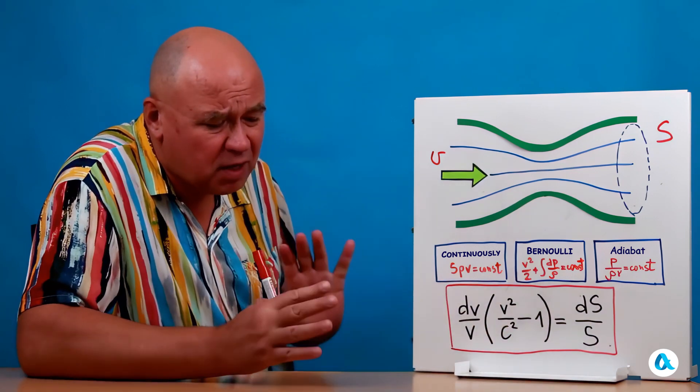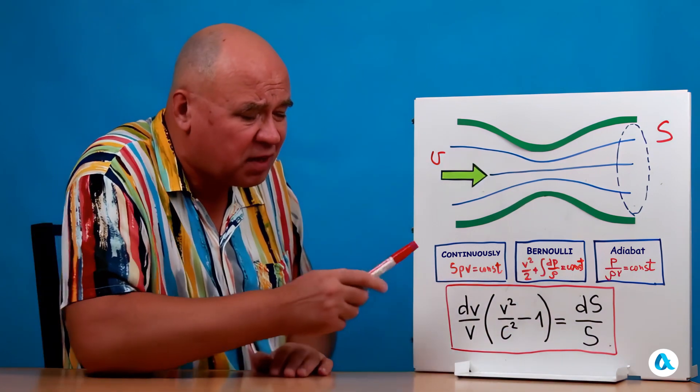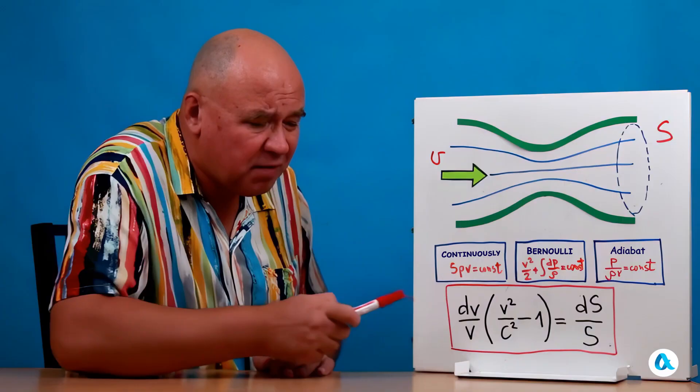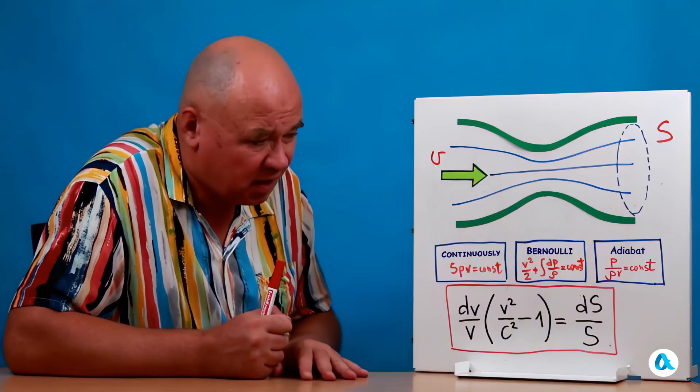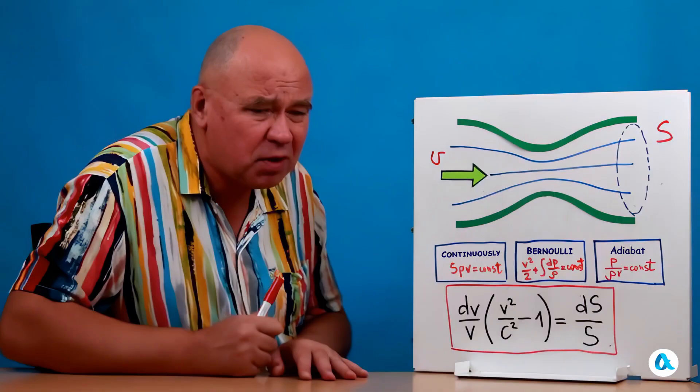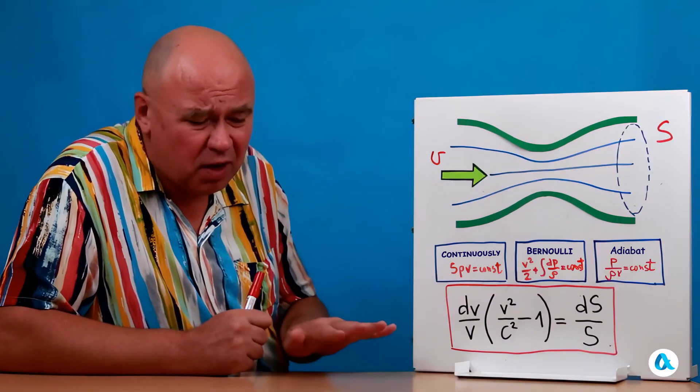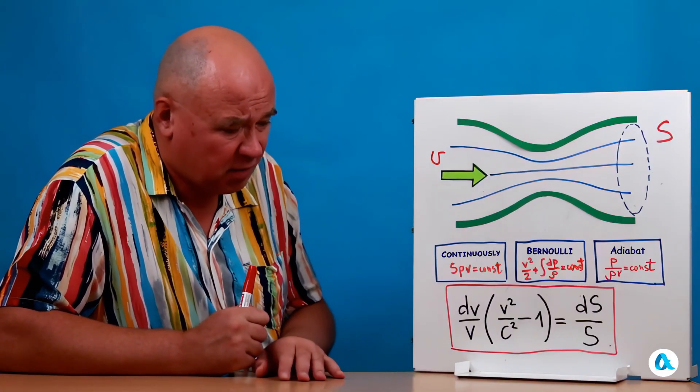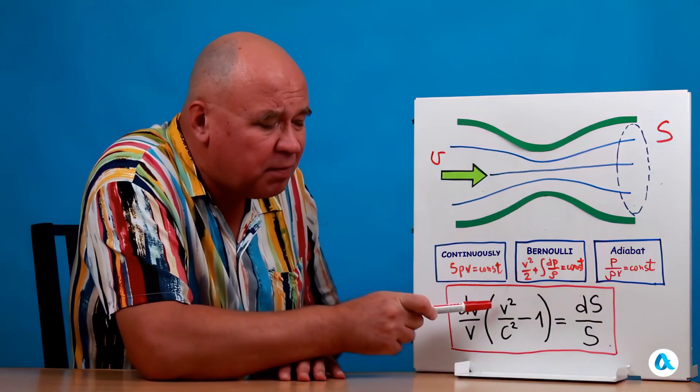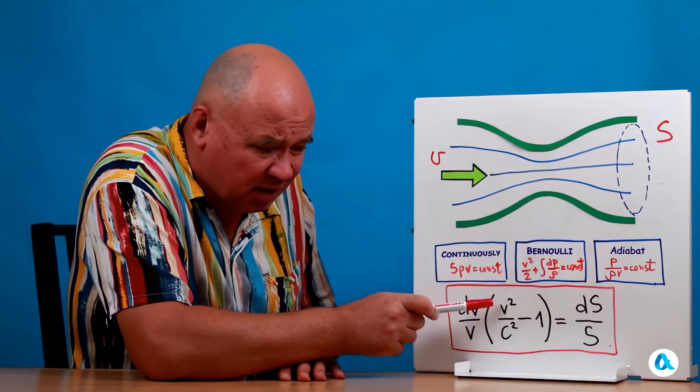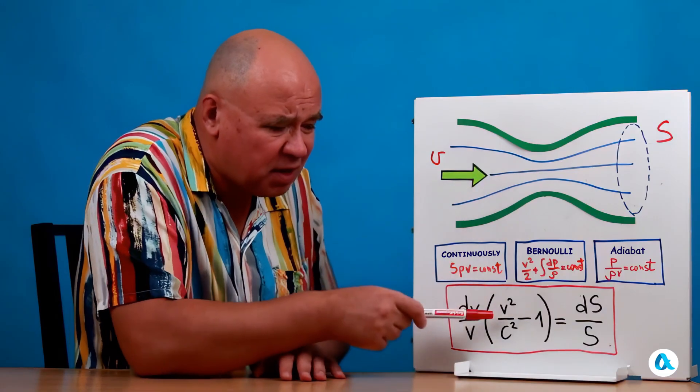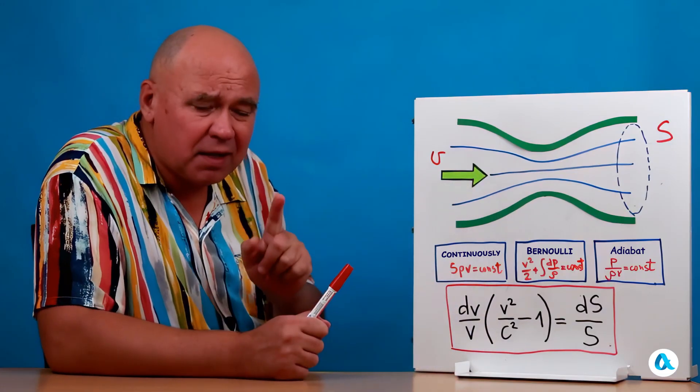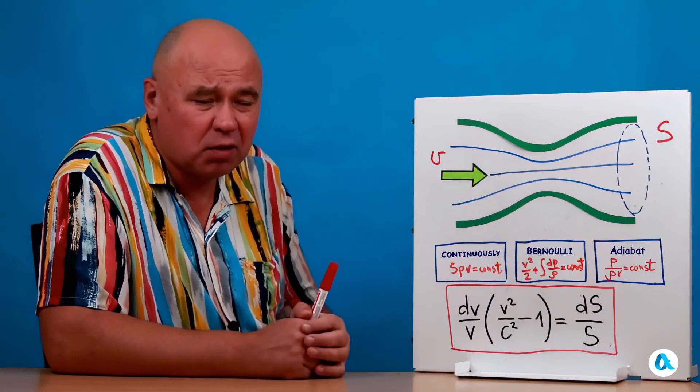Here, I have dV divided by V, which is the relative increment of velocity. And here, dS over S, the relative change in area. And here, there's this bracket, V squared divided by c squared minus one. V is the velocity at this particular cross-section. And c is the speed of sound, again at this cross-section.